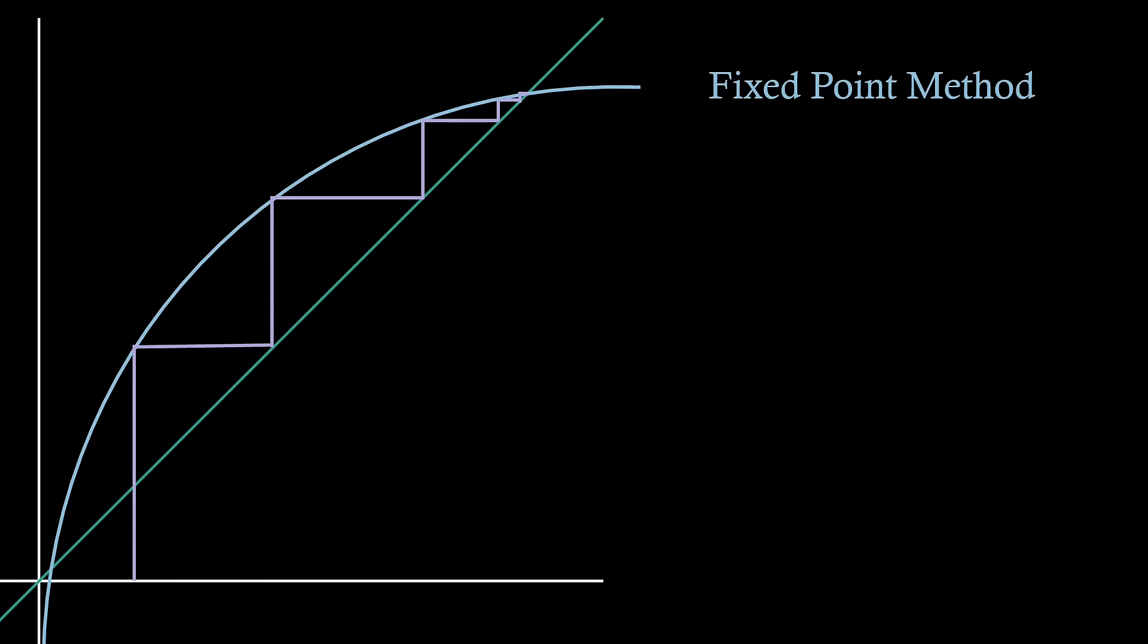Firstly, recall for this method we have defined two functions, f of x equals 0, and rearranged this to produce a new function, g of x equals x. At the root of our function f, it is the case that g evaluated at the root will produce the root itself. Now, if we define the error at each step, en, to be xn minus the root, then this is also equal to g evaluated at xn minus 1, minus g evaluated at the root.